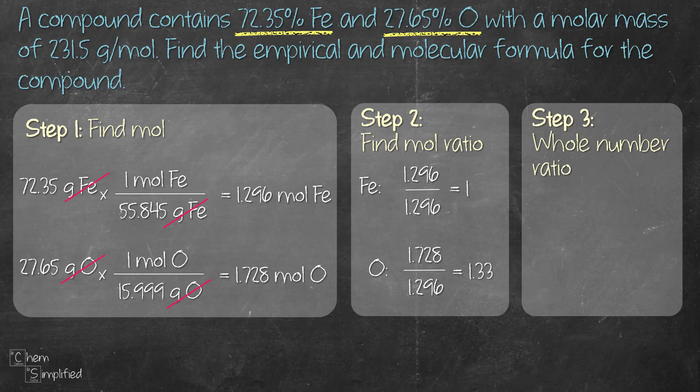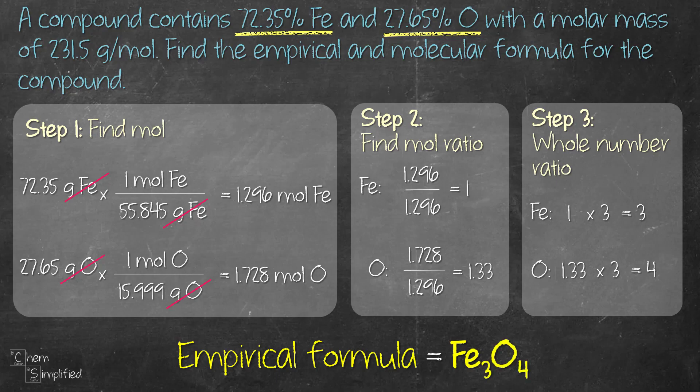So we need to multiply 1.33 with 3 and that's going to give us 4. That's a whole number. Now if we multiply 1.33 with 2, we're going to end up getting 2.66 and that's not a whole number. That's why we go with 3. So if you're not sure what number to multiply, just start from 2, work your way up and then you'll see which number will give you a whole number. And once you found that, like in our case is times 3, we need to do the same thing for Fe. So that will give us 3 Fe. So now we do have the whole number ratio for Fe and O. So that gives us the empirical formula Fe3O4.